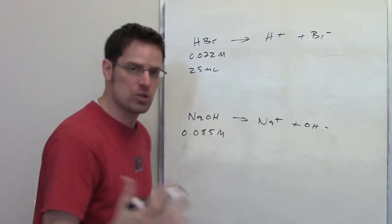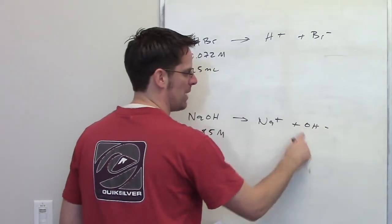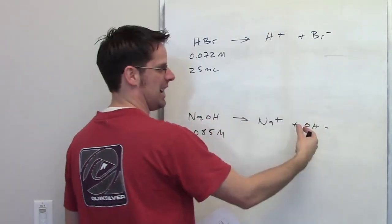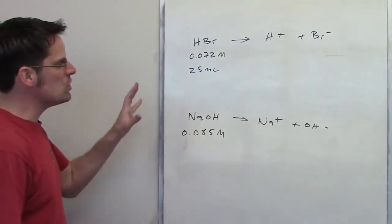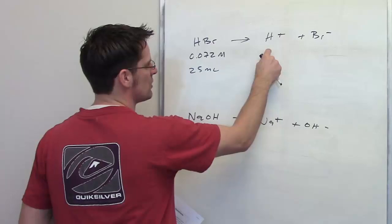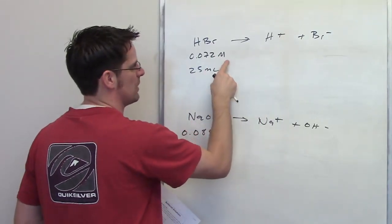Now when we say neutralize, what we're talking about is this OH- killing the H+. When they combine, they form H2O. In order to do that, I have to figure out how many moles of H+ this amount of HBr is going to spit out.